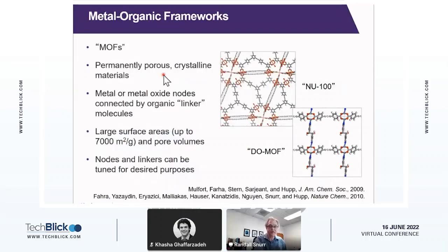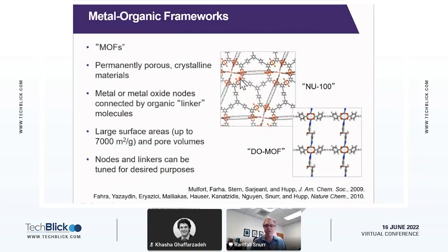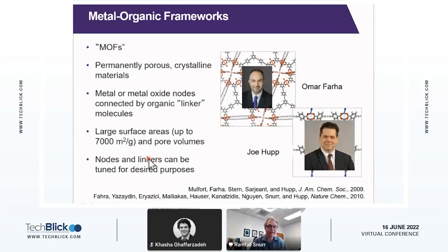So MOFs are porous crystalline materials, and they're made in a really interesting way from metal nodes that are connected by organic linker molecules. In one case the linker connects to two different nodes, and in another case this linker connects to six different metal nodes, so you get a variety of different topologies. You can change the pore size, introduce different chemical functionality, and make an enormous number of different structures — really tuning them for different applications. The two materials I'm showing you here were developed by my colleagues Joe Hupp and Omar Farha, also at Northwestern University, and we work very closely together.